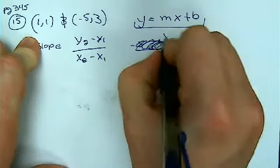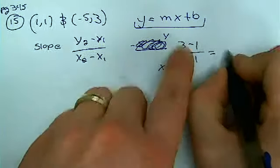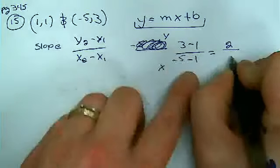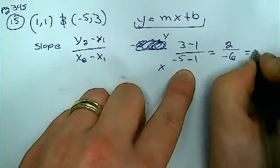So the y's go on top, x's go on the bottom. Well, that gives me 2 over negative 6, which simplifies to a negative 1 third.